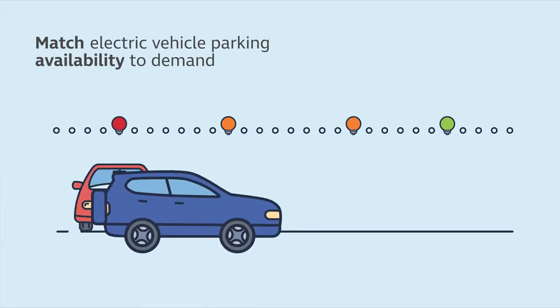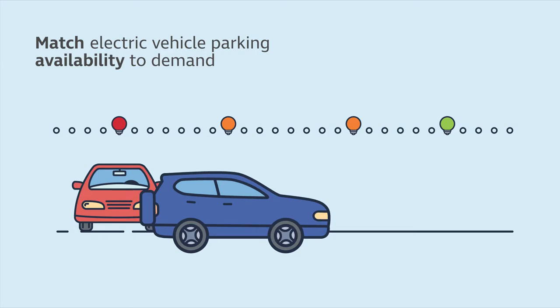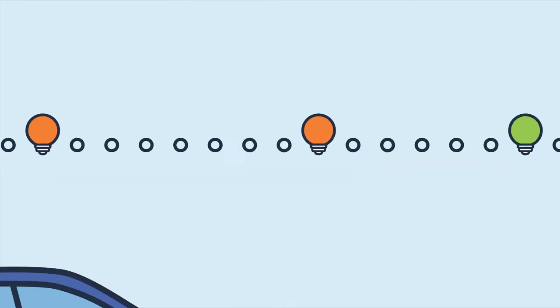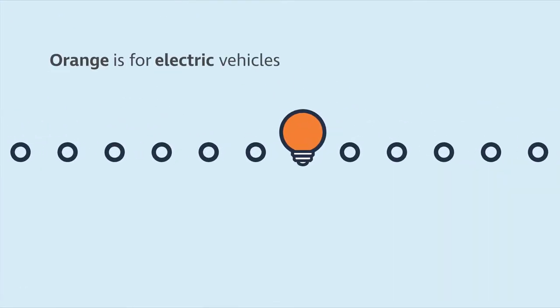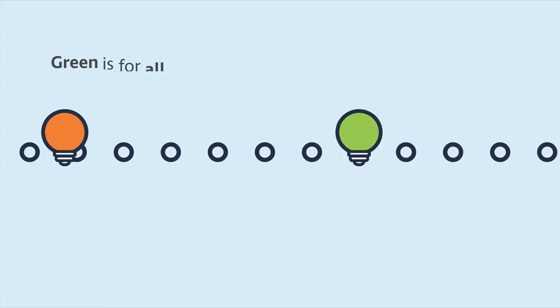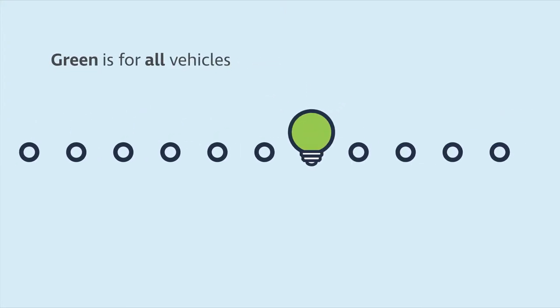As you approach the electric vehicle spaces, look up to the smart lighting. The orange light is for electric vehicle parking only and a green light means there's a space available to all vehicles.